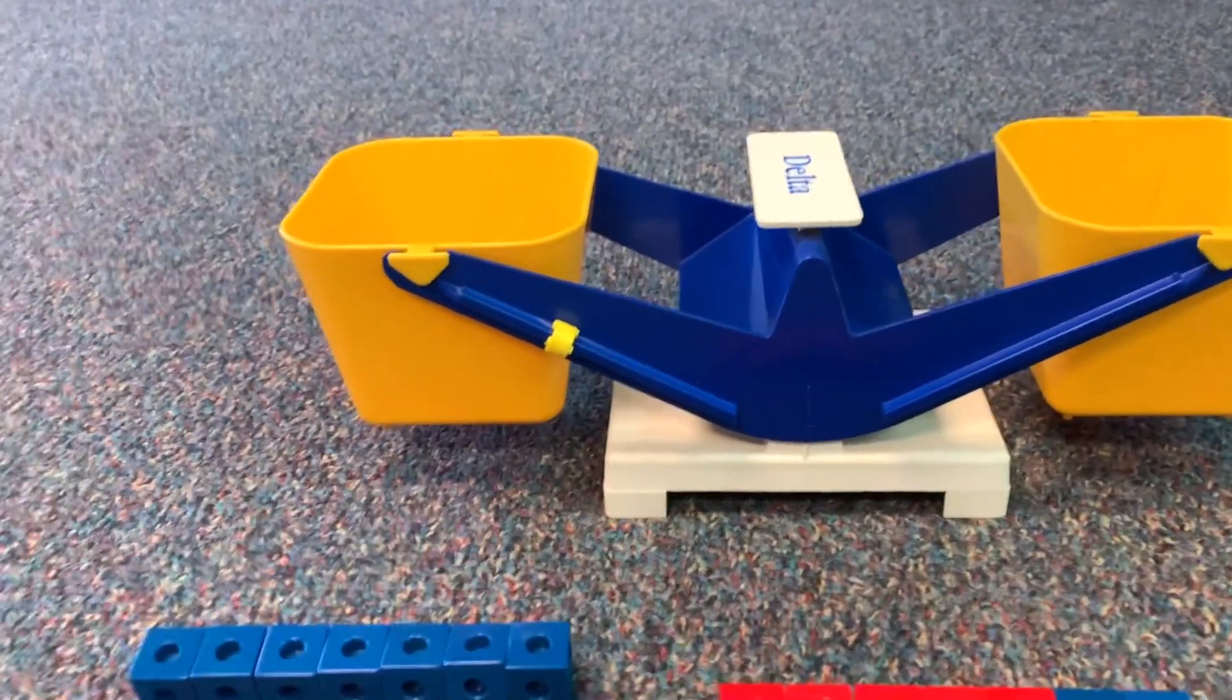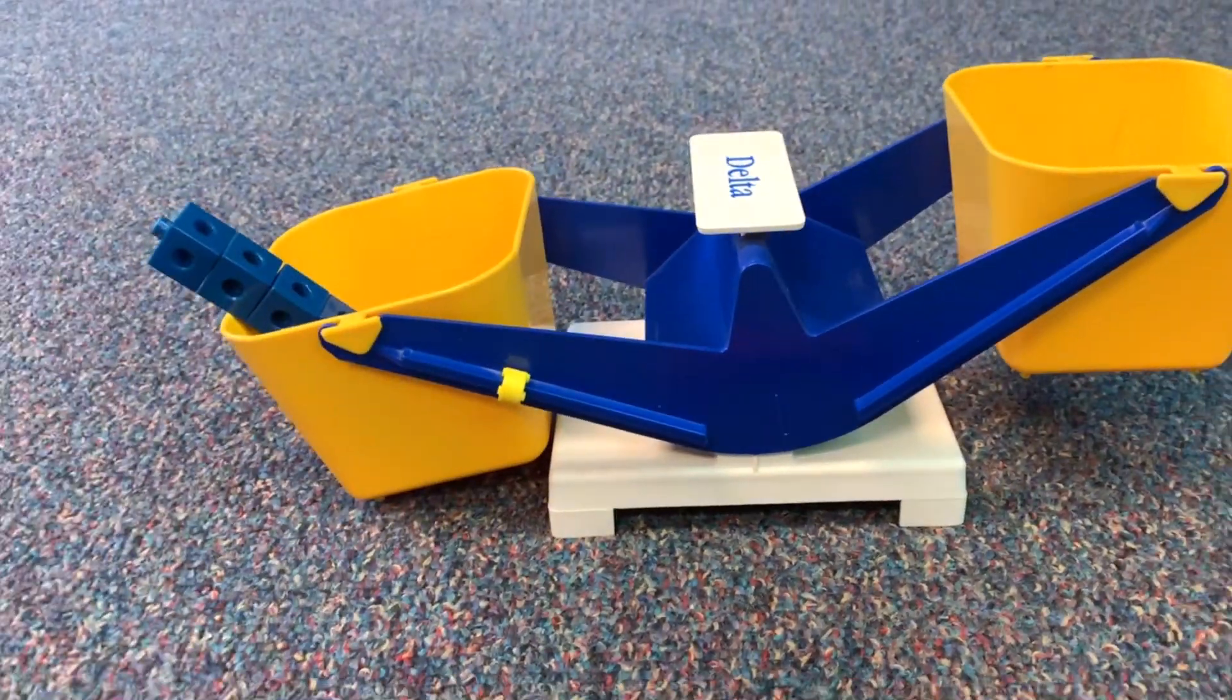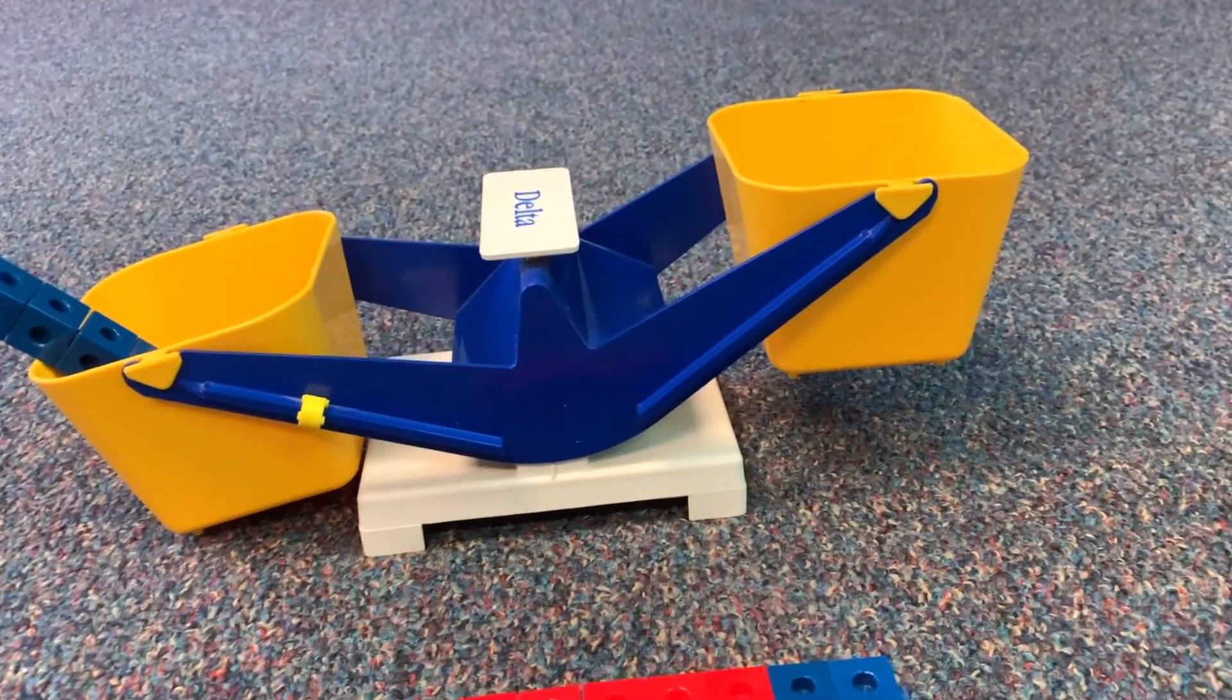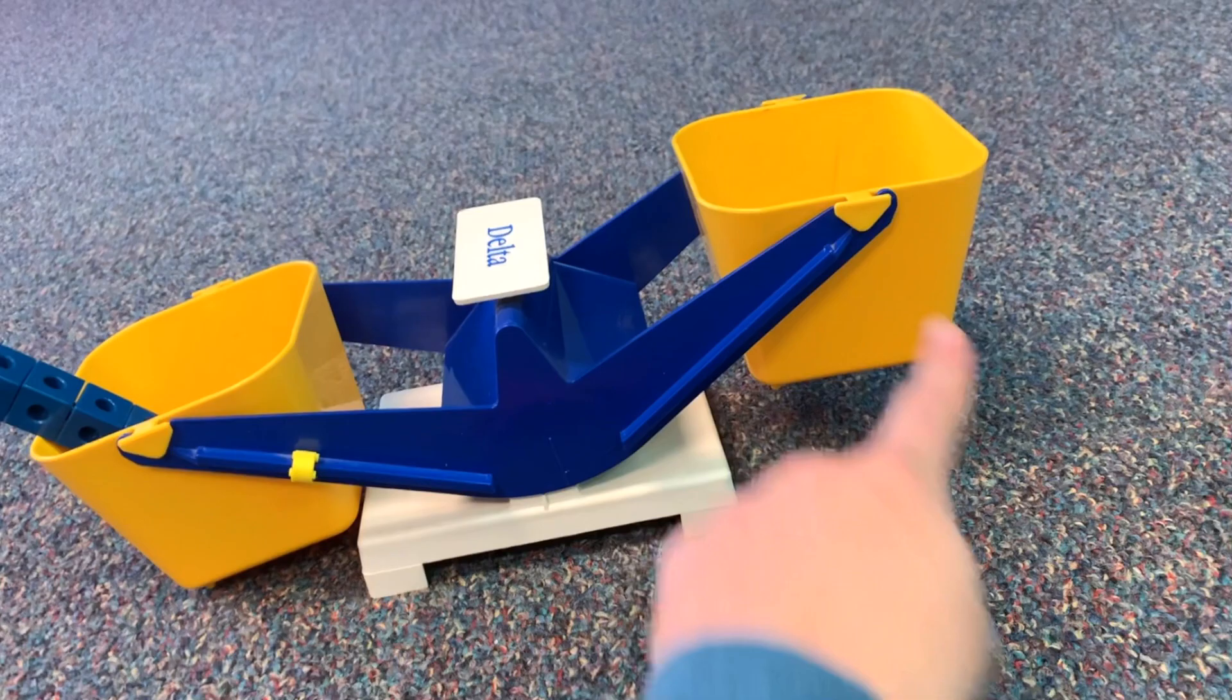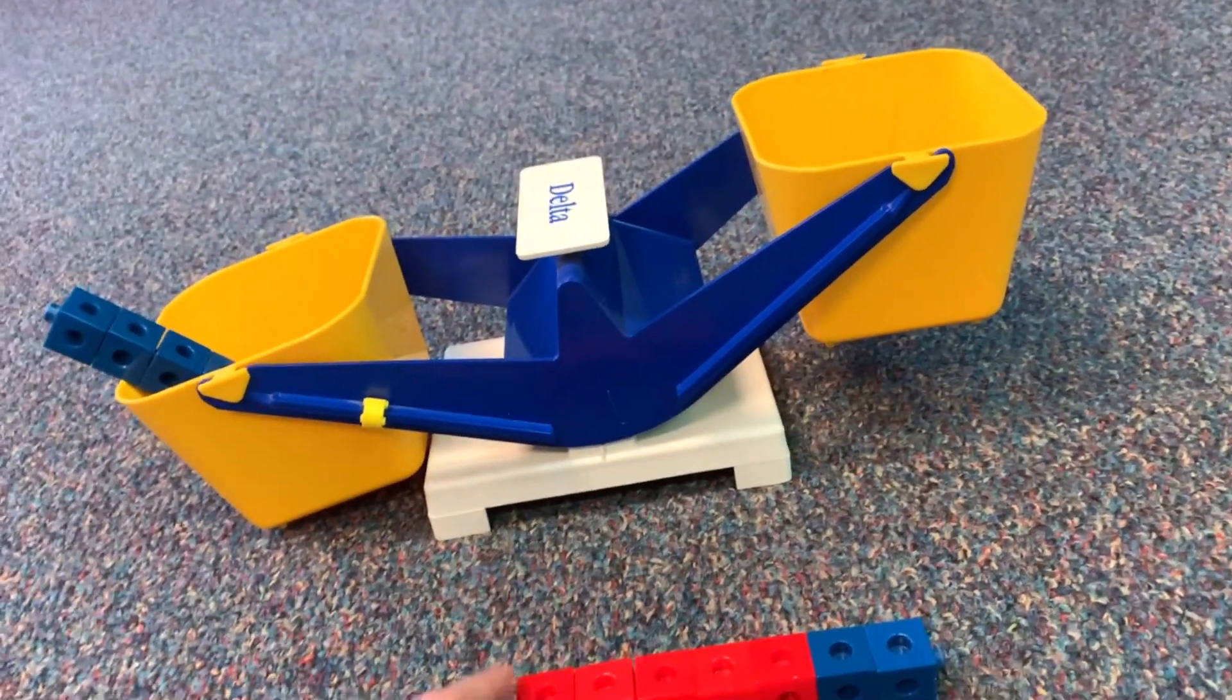Let's try it out in the pan balance. I'm going to put the seven on this side. And you'll notice it's sunk down because it's heavier, because right now there's zero on that side. But let's see if five plus two is equal to seven.